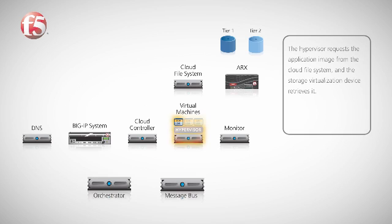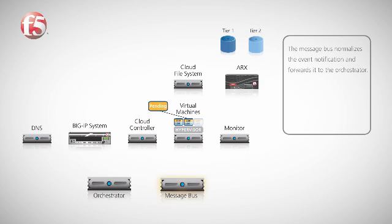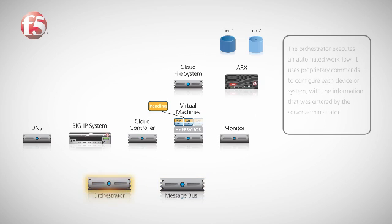Next, the hypervisor requests the application image from the cloud file system. The storage virtualization device retrieves the application image via NFS from the appropriate storage tier. While this is happening, the message bus normalizes the event notification and forwards it to the orchestrator. Once the orchestrator receives the event notification, it executes an automated workflow.